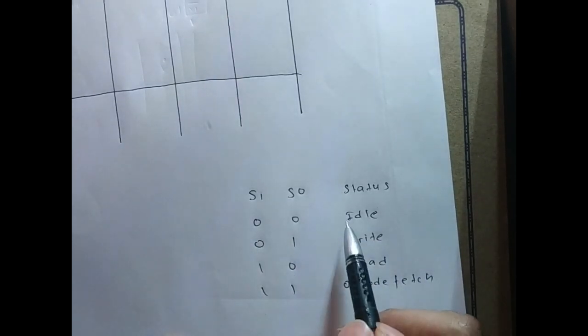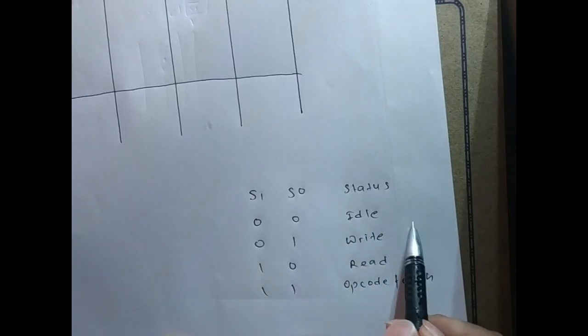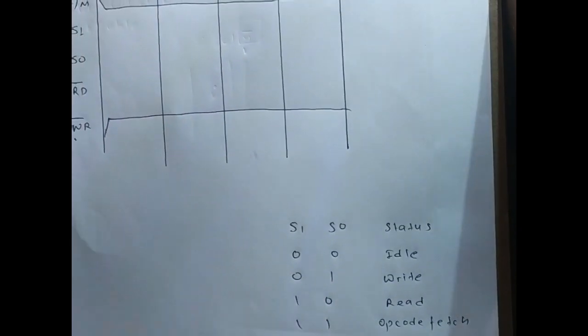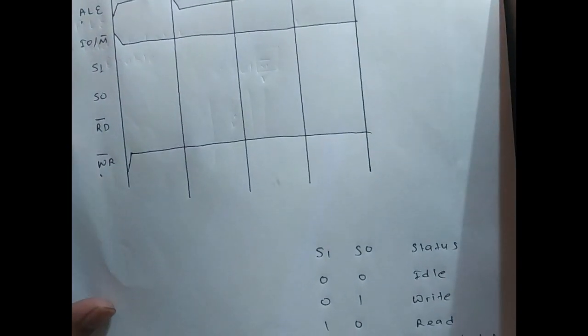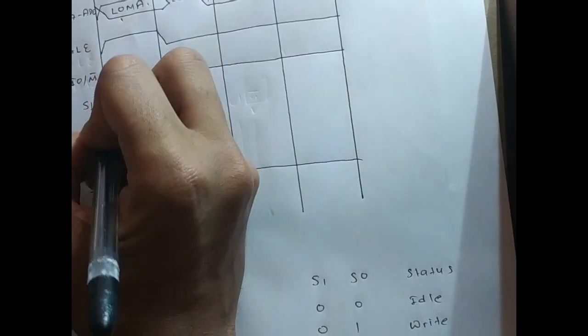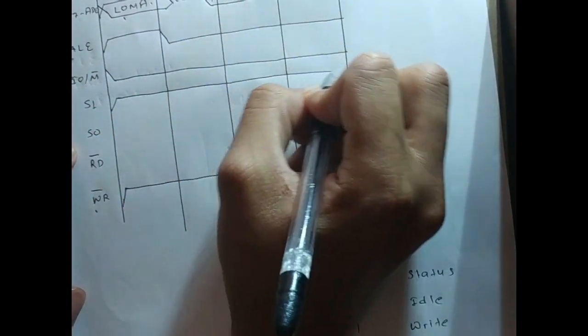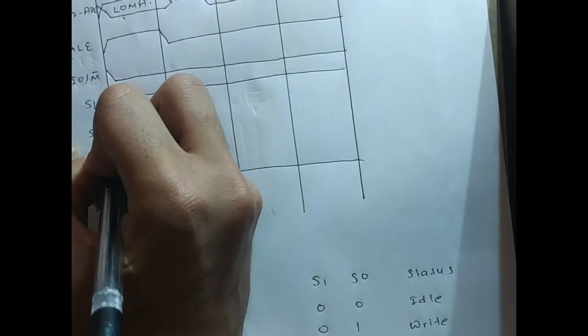From the status table: for memory read S1=0, S1=1; for I/O write S1=0, S1=1; when the microprocessor is idle it will be S1=0, S0=0. Since we are performing opcode fetch, both S1 and S0 will be 1, so make both high.